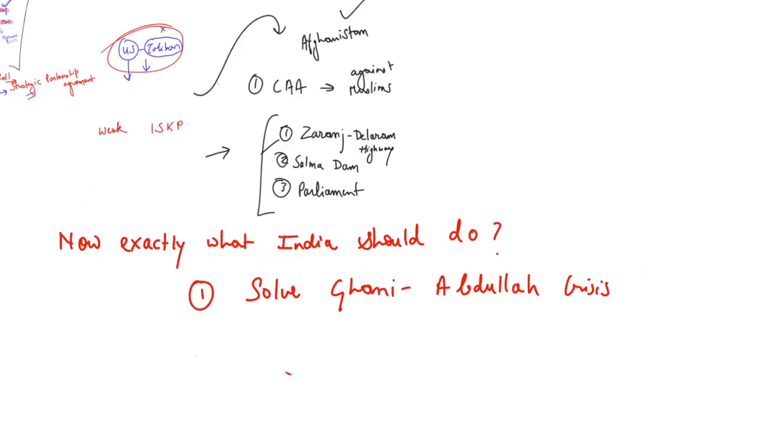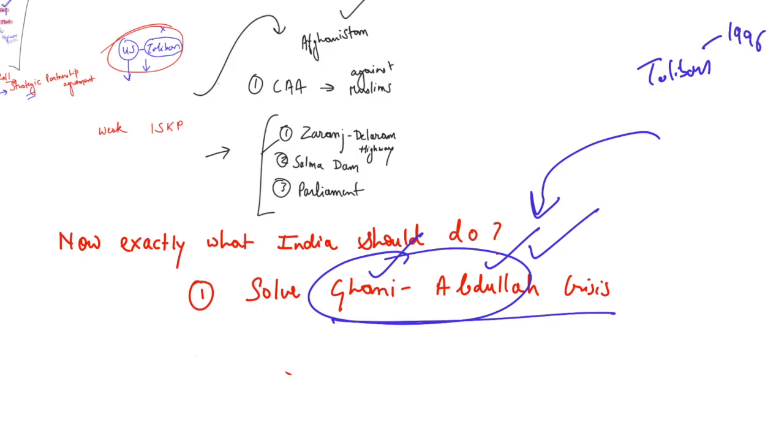Now, what exactly India should do? Number one, it should solve the Ghani-Abdullah crisis which is going in Afghanistan. Now, what has happened into the recent election? Ashraf Ghani has been elected as a president but Abdullah says that the election was forced and therefore a political crisis is now going between the two as both of them claim themselves to be the true president. And if this crisis is not solved as earliest, therefore, Taliban will take the advantage and Taliban will get the power as Taliban had done earlier in 1996.